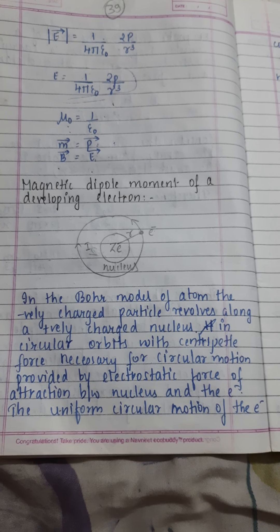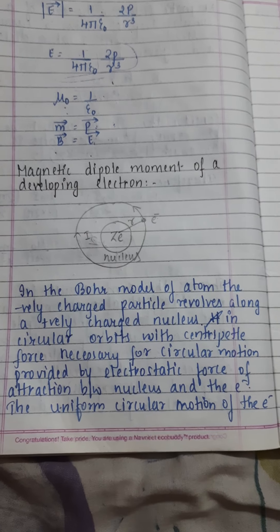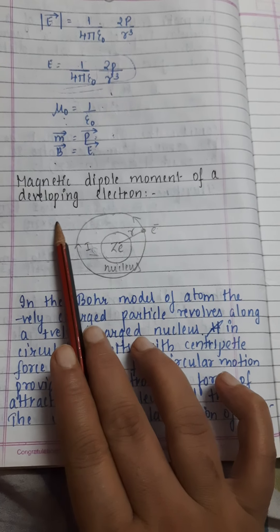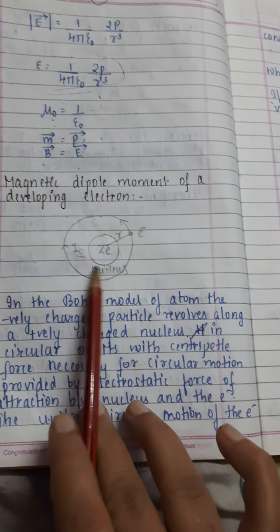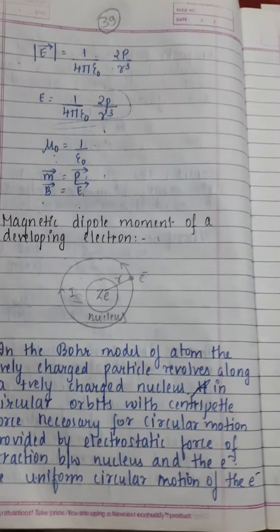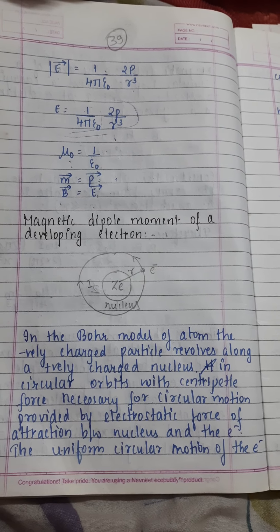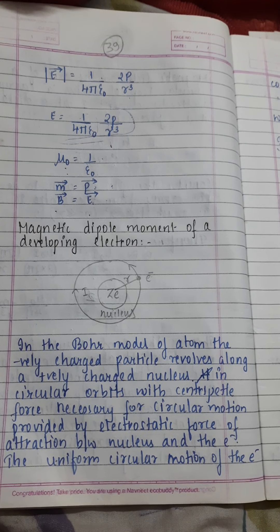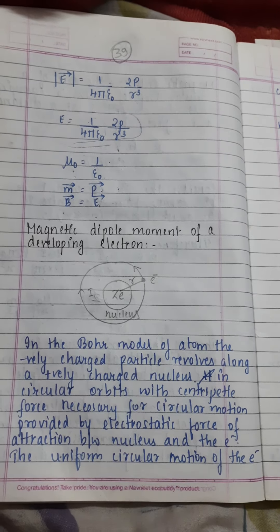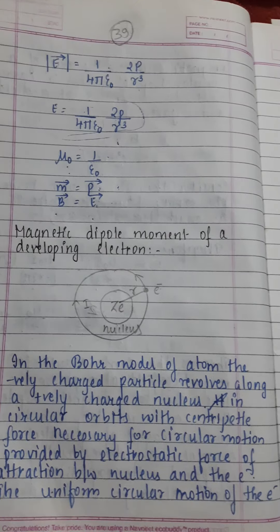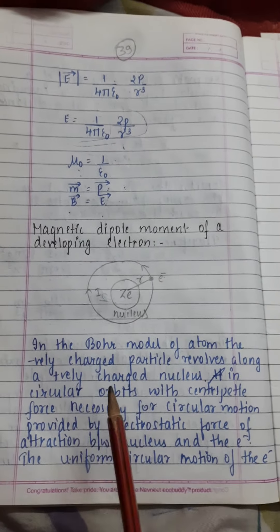Hello, good morning 12th class students. Today we are going to discuss the magnetic dipole moment of a developing electron. When an electron moves in orbit, the moving electron will produce current, and this current produces a magnetic dipole moment. So how much is this dipole moment? We calculate using this derivation.